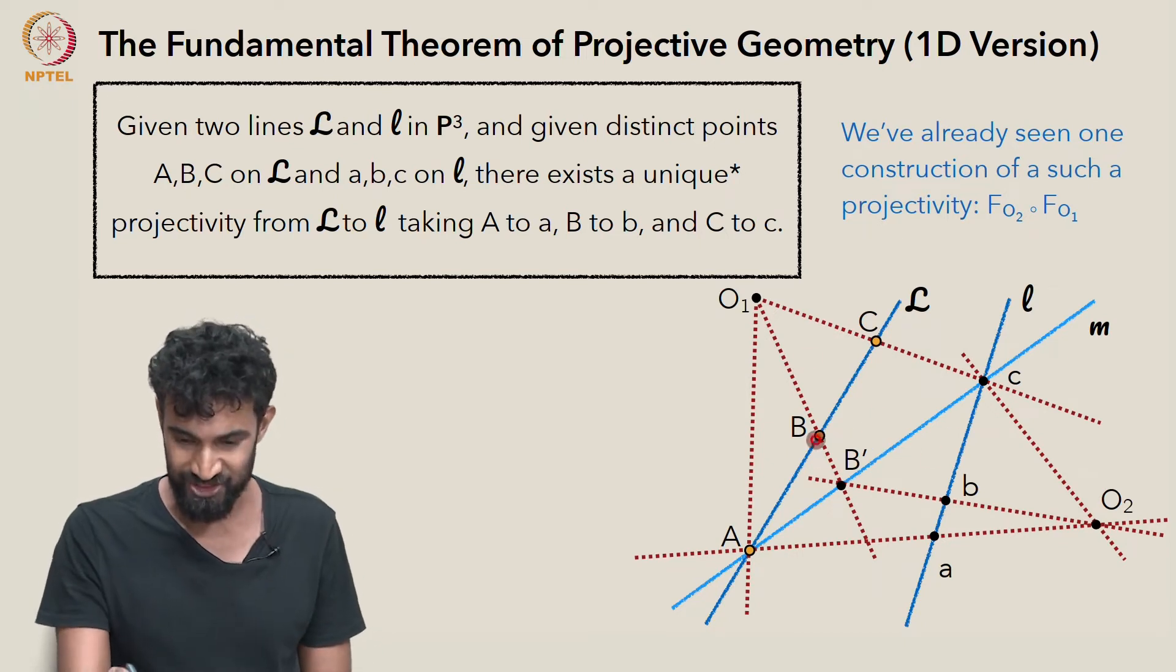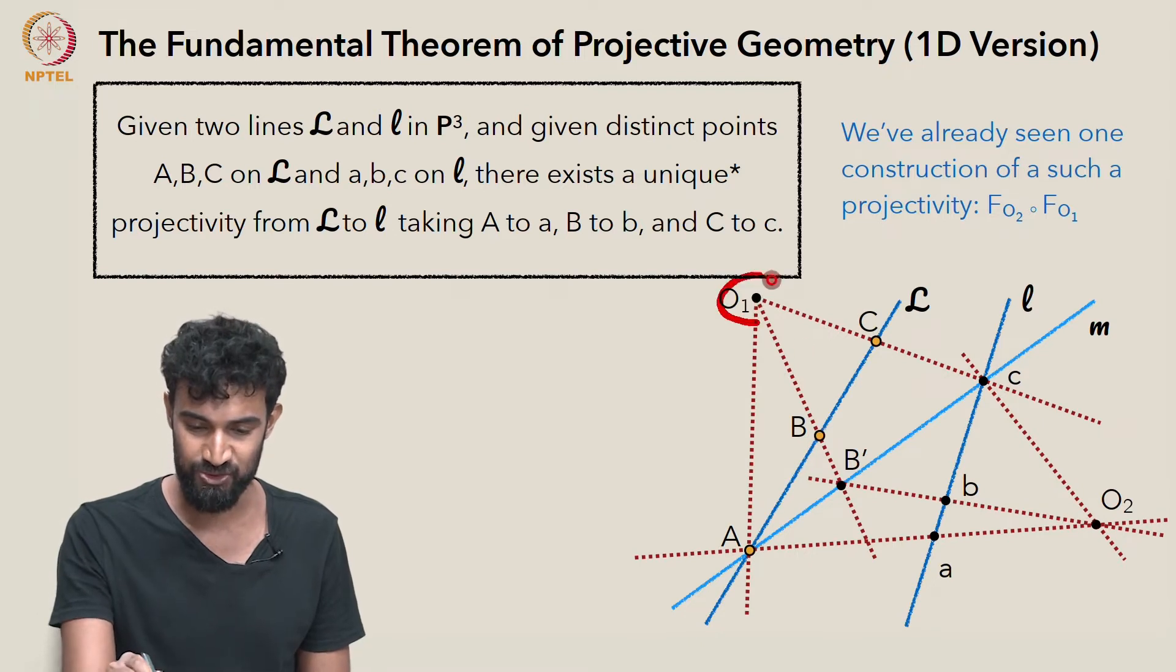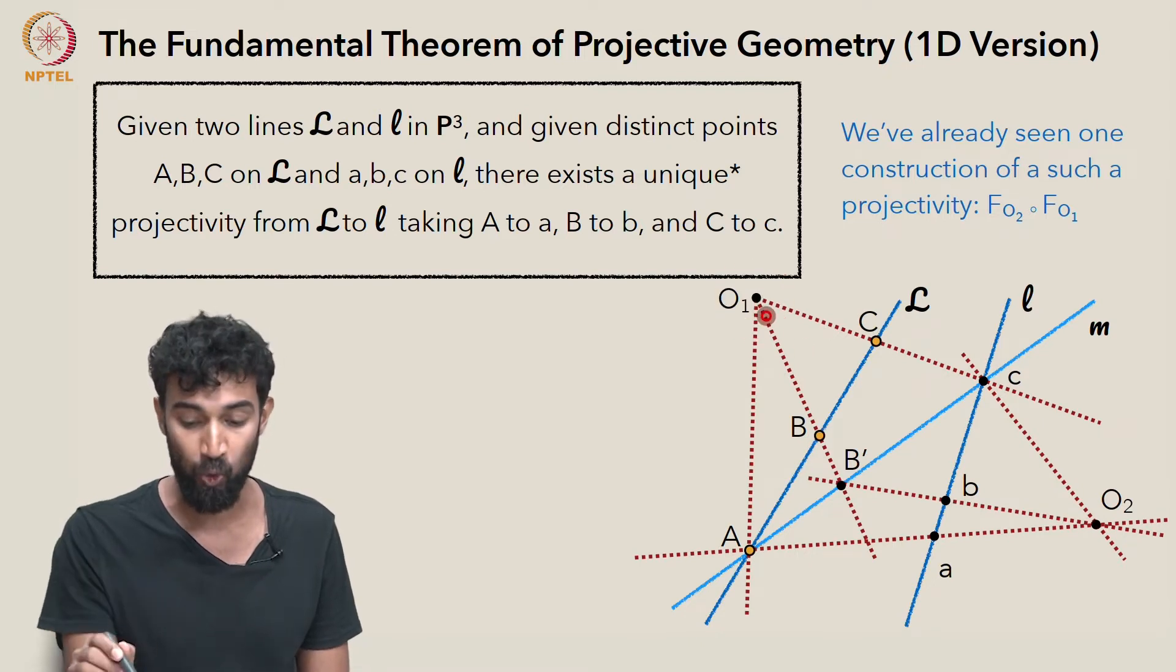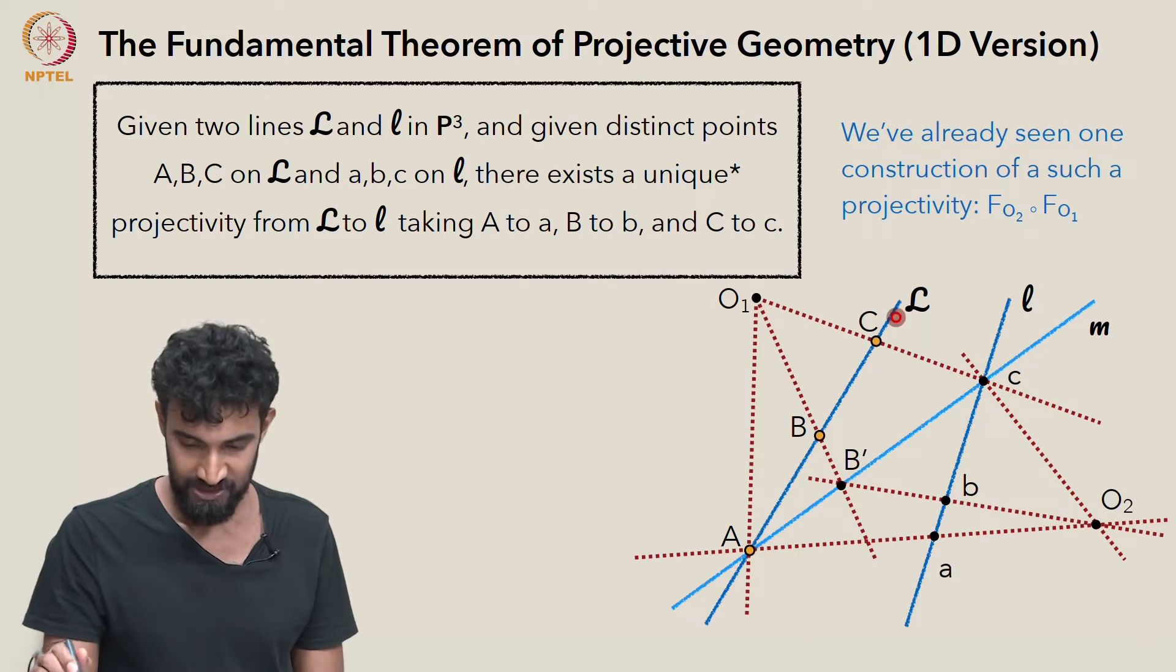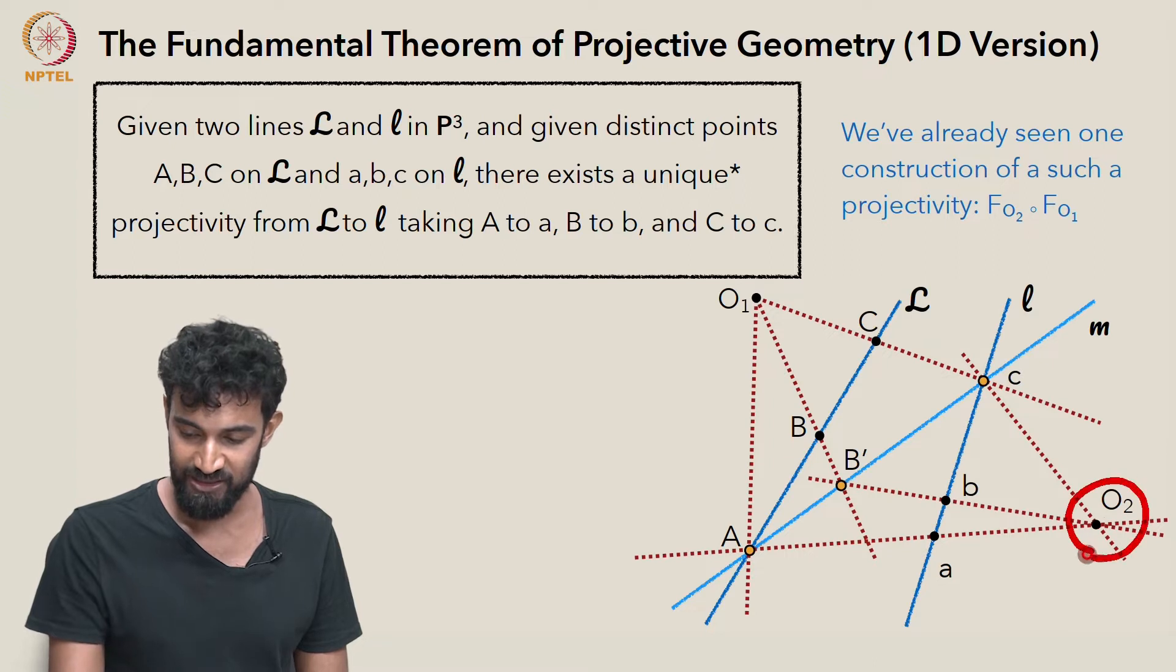The construction I'm talking about is this one, which mapped first using a perspectivity centered at O1, we sent A, B, and C to A, B prime, and little C. And then using the second perspectivity, we pulled those into little a, little b, and little c.